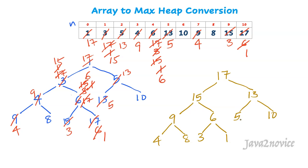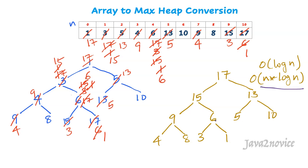What is the time complexity? In the worst case, every heapify process takes O(log n) time. If we apply heapify to each element in the array, the time complexity would be O(n log n) in the worst case, where n is the length of the array. However, we can improve this performance by starting heapification from non-leaf nodes, since leaf nodes have no children and require no swapping.